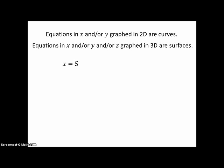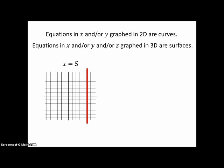For example, here's another example. If X equals 5, in two dimensions we get a vertical line. Notice that Y is not in the equation, and therefore, Y can take on any value it wants.